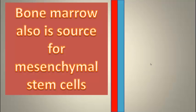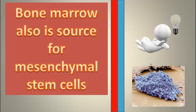The bone marrow is also a source for another type of stem cell, the mesenchymal stem cell, a cell that is the progenitor or the beginning of various forms of connective tissue including cartilage.